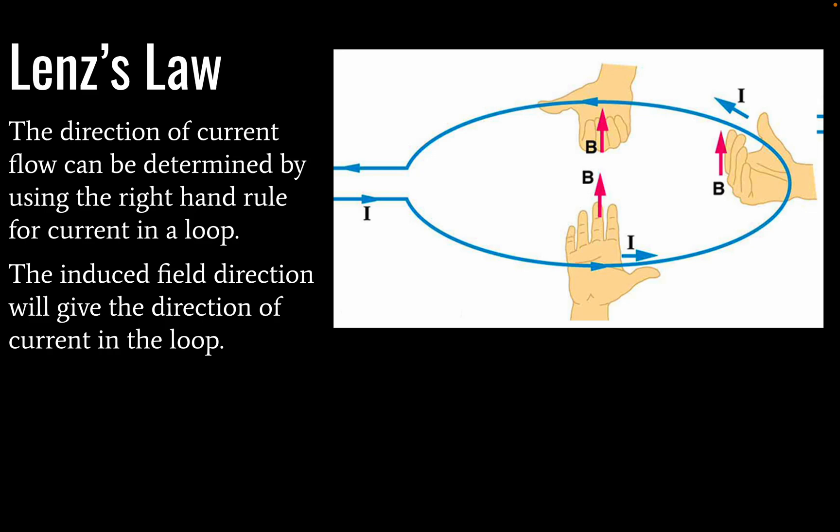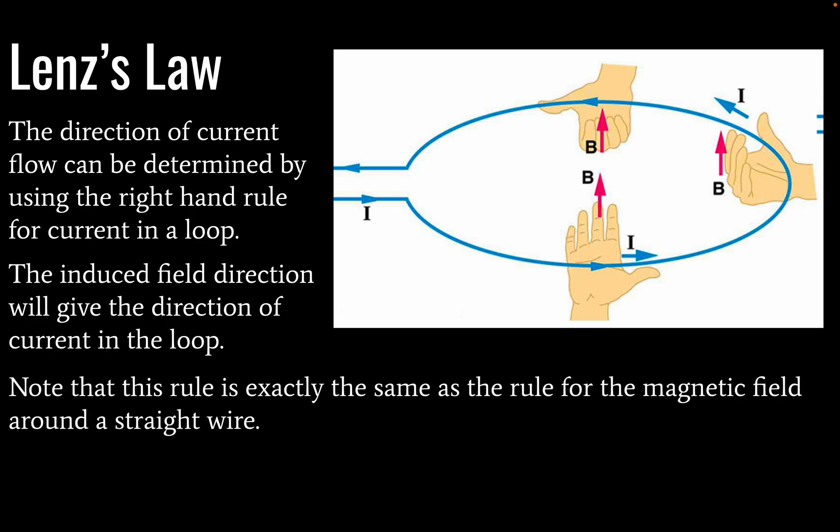So the induced field direction is going to give the direction of current in the loop. And we've already discussed this last point here.